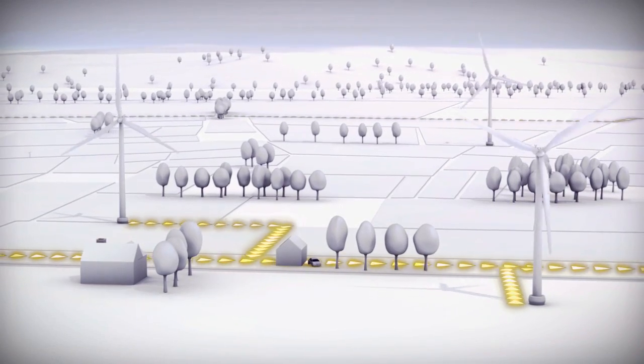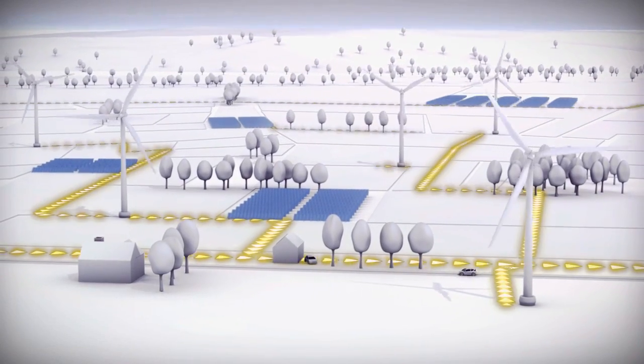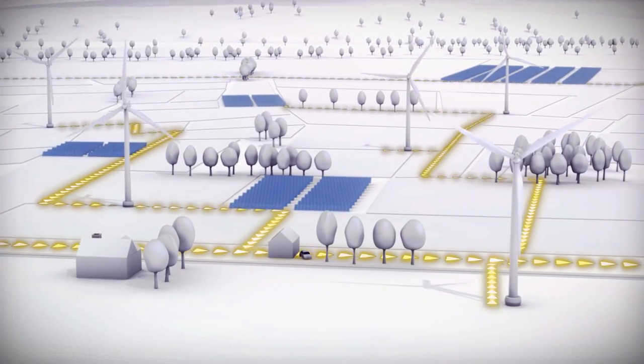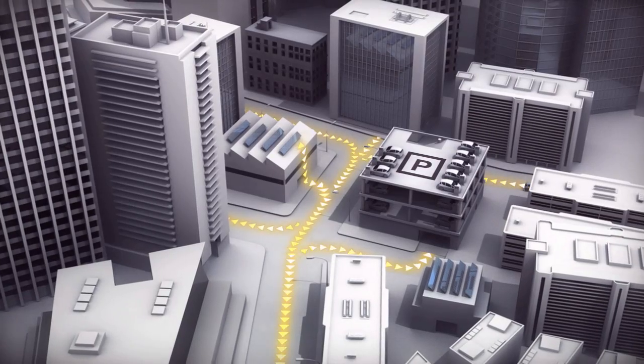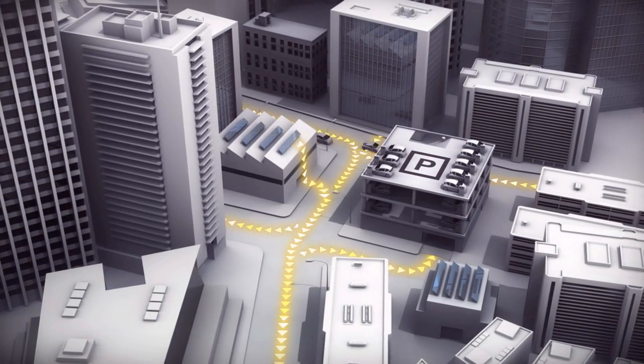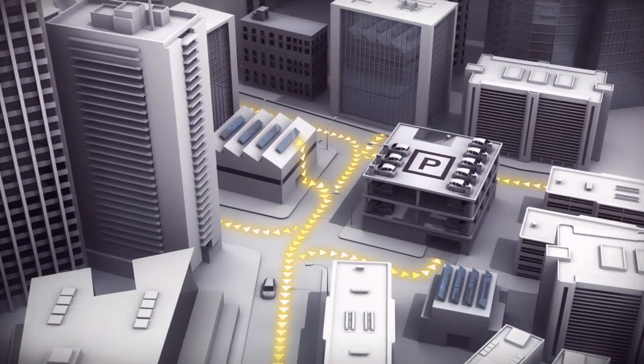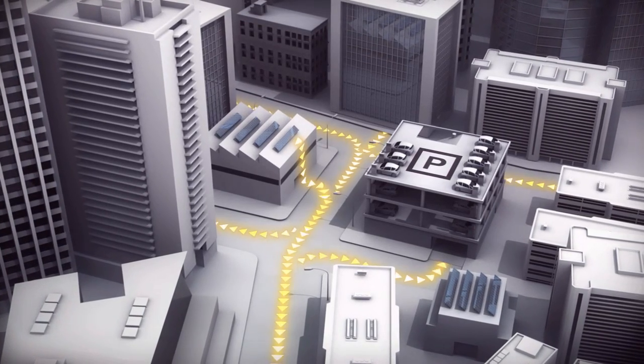More and more fluctuating renewable power generators are being connected to the grid. However, network stability must still be maintained at all times. Intelligent applications guarantee precise control of load and demand. This keeps the grid stable.